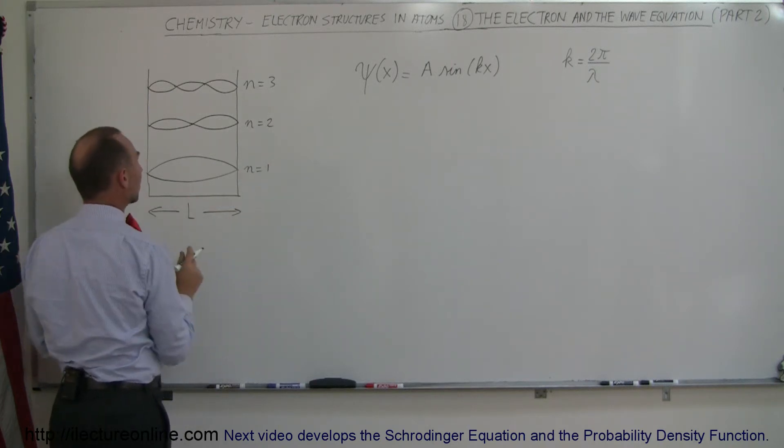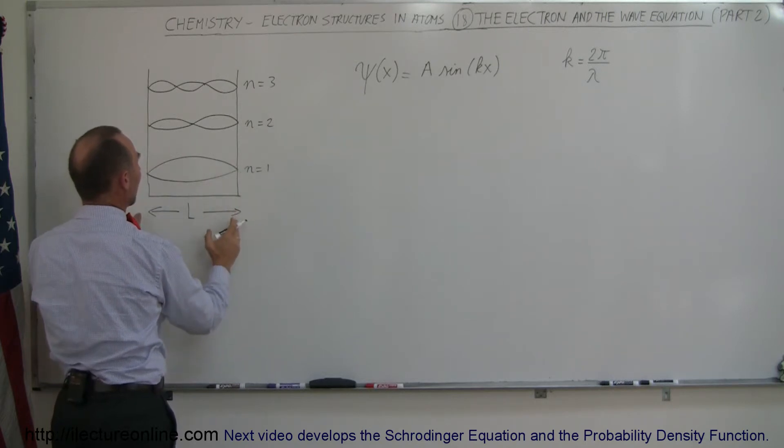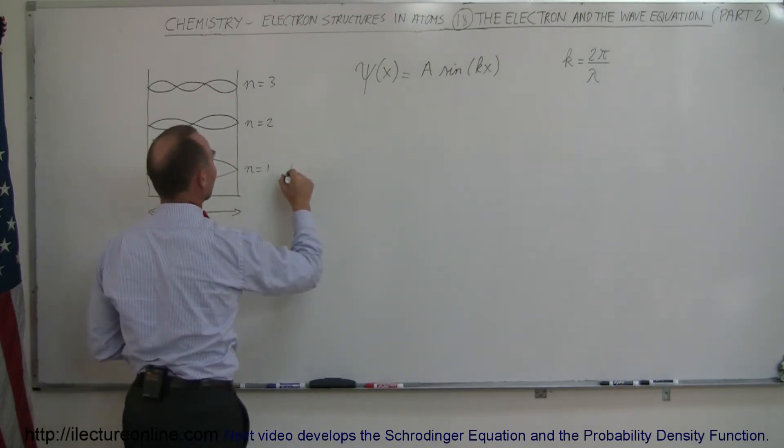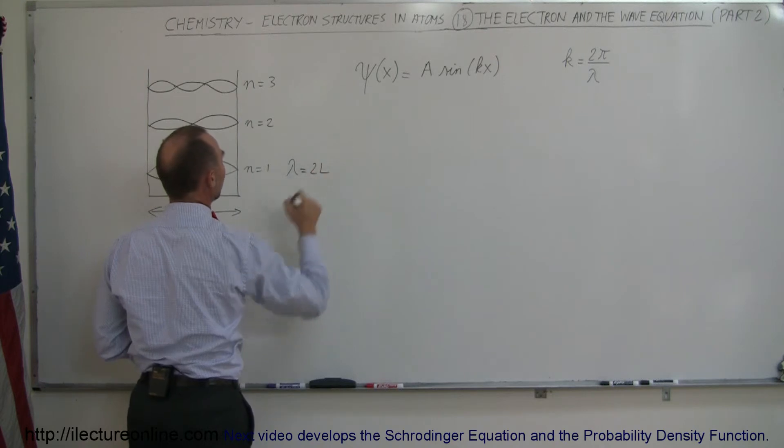because we're talking about a one-dimensional box here, you can see there's only a half a wavelength, so a full wavelength would be twice the length of the box. So here we can say that lambda is equal to 2L.